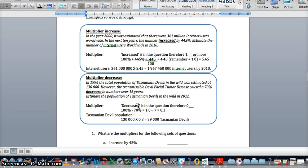In the year 2000, it was estimated there were 361 million internet users worldwide, and in the next 10 years, that number is going to increase by 445%. So the key word, boys and girls that don't like to read too much either, the key word is increased. Straight away you should be saying to yourself, this is going to be a multiplier of at least this, or up, at least that, there's going to be something in this column.